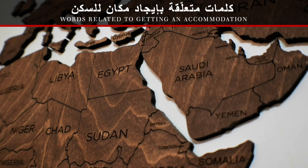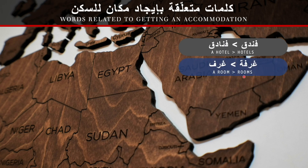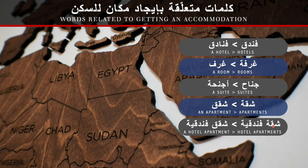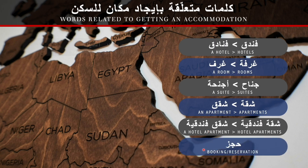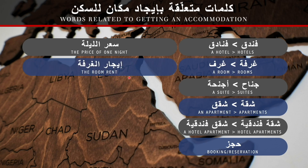The last group of words in this lesson is related to getting accommodation while traveling. A hotel: فندق. Plural: فنادق. A room: غرفة. Plural: غرف. A suite: جناح. Plural: أجنحة. An apartment: شقة. Plural: شقق. A hotel apartment: شقة فندقية. Plural: شقق فندقية. A booking or reservation: حجز. The price of one night: سعر الليلة.